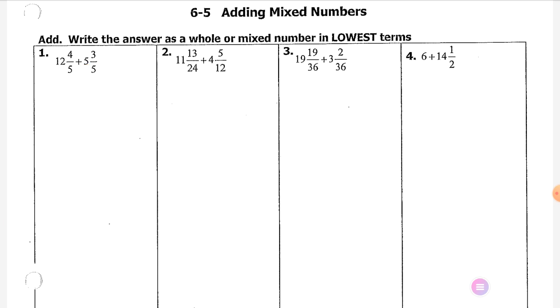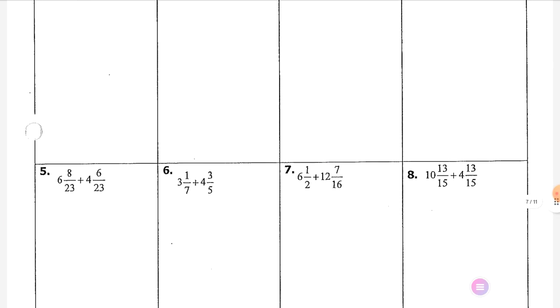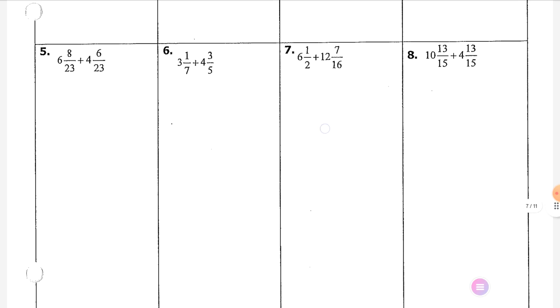Let's go down and do number 6. Okay, number 6. First thing we have to do is find a common denominator. Ethan, what can I turn a 7 and a 5 into? If you can't think of something, you can always multiply them together. 35. Okay, so now let's show that work.